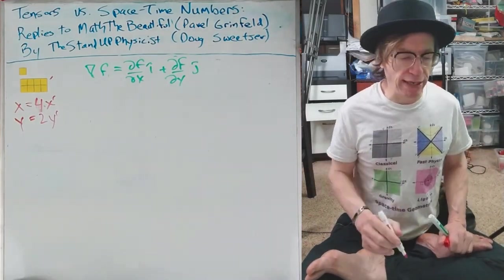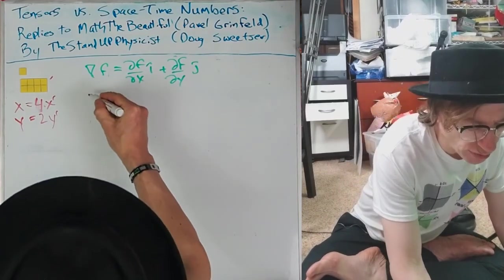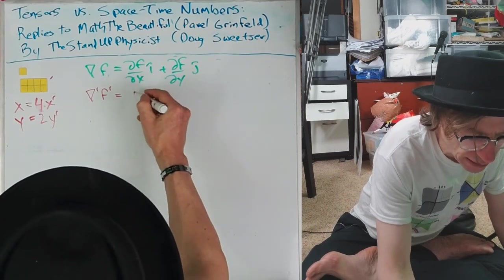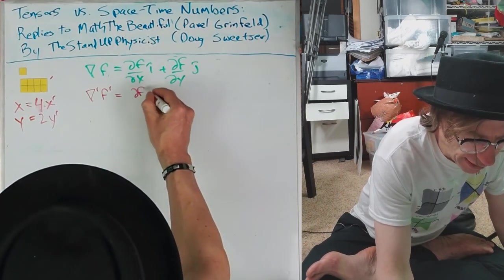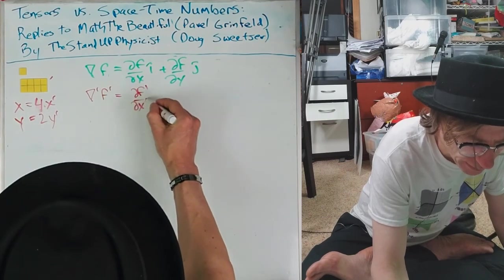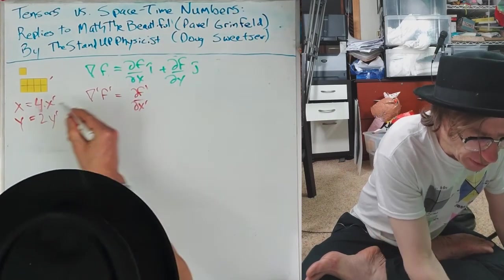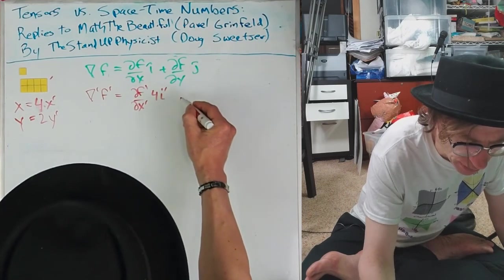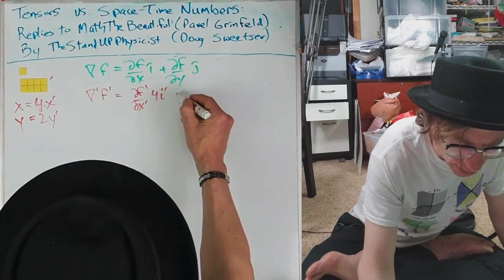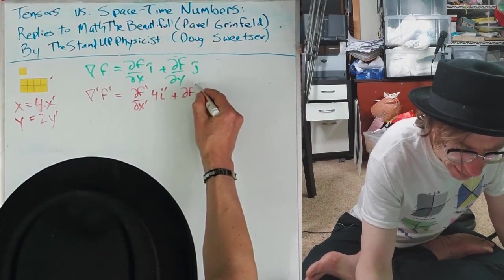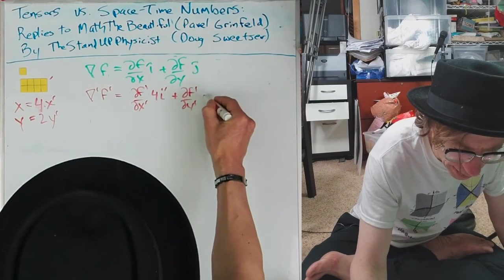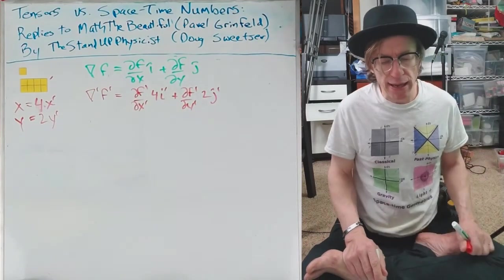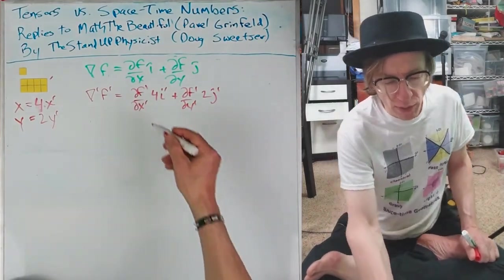Alright, so now we think about what's the gradient in this primed sort of thing. What is this beast? And so you df prime, you can put primes everywhere. Now instead of i hat, we actually have 4i prime sort of thing. Okay. Plus df prime, dy prime, 2j.